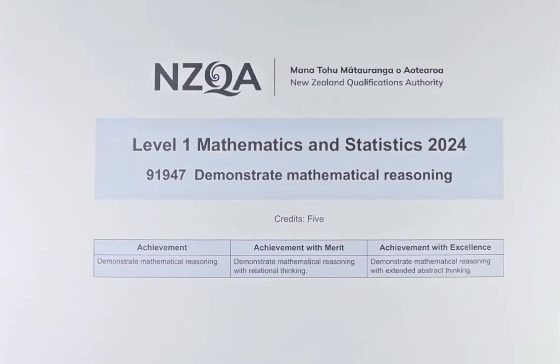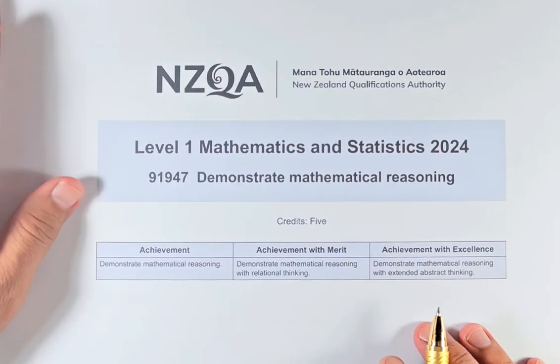Good day! In this video, we are going to do question 1c of the 2024 Demonstrate Mathematical Reasoning NCEA Level 1 Algebra paper. This paper is made up of some algebra, some trigonometry, and more including measurement. This is a 5 credit paper. So without further ado, we will do question 1c. This is an excellent question and it will take some time. So let's do it.